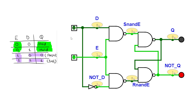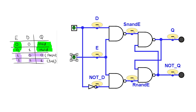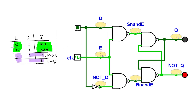So what if instead of two inputs we use a single input D and use its negative version as the other input? This is called a gated D latch. When E is off, the internal SR latch is in hold mode. When E is on, the SR latch copies the D input. We can now effectively store a data bit in a circuit: turn E signal on, send the bit in this signal, turn E off — the bit is stored and can be read as output Q.